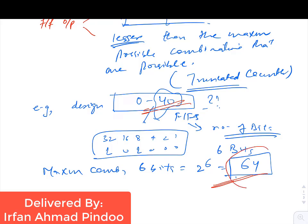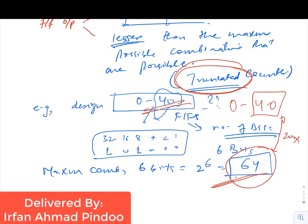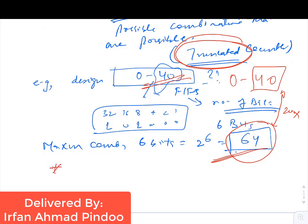The maximum states possible are 64, but the counter we are designing displays numbers from 0 to 40 only, so there are 20 states which are not shown. We are 20 states less. Such a counter is called a truncated counter. In this truncated counter there is one special counter we are going to design — the decade counter.